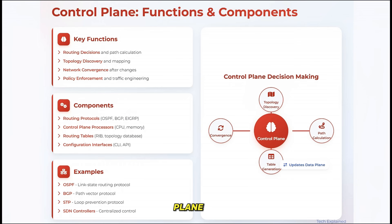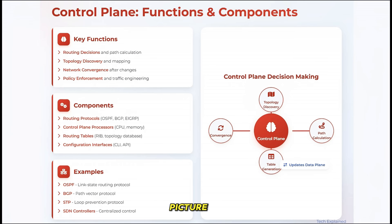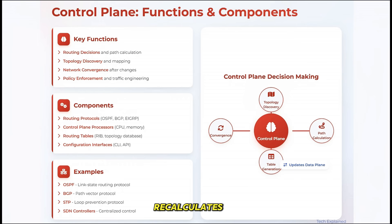Unlike the data plane, which is all about speed, the control plane is about intelligence and adaptability. It needs to understand the bigger picture of the network and make smart decisions about how to route traffic. When there is a change in the network — like a link going down — it's the control plane that detects this change, recalculates routes, and updates the forwarding tables that the data plane uses.